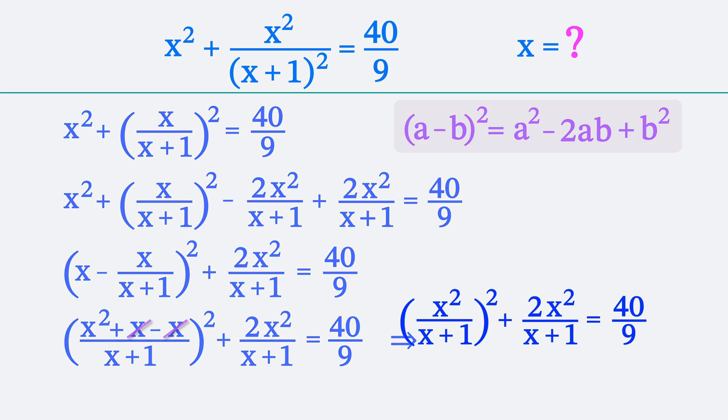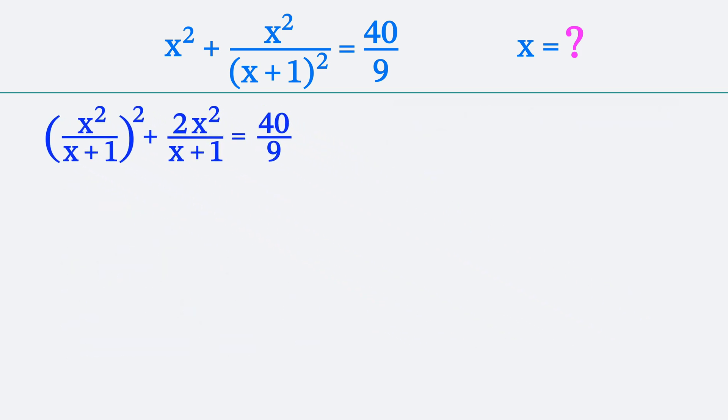Now, if we look closely at the equation, we can see that it's convenient to replace x squared divided by x plus 1 with a new variable. For example, with the variable y. As a result, we get the quadratic equation y squared plus 2y equals 40 divided by 9. Let's multiply both sides of the equation by 9.